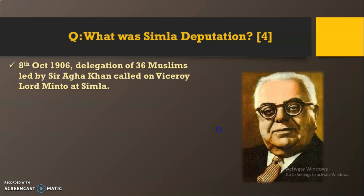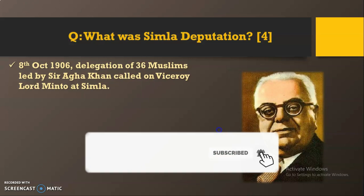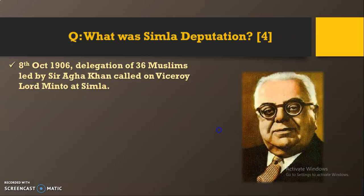Point number one: on 8th October 1906, a delegation of 36 Muslims led by Sir Agha Khan — as you can see in the picture — called on the then Viceroy, Lord Minto, at Shimla. There were certain prominent Muslim leaders at that time: Agha Khan, Nawab Noosinul Mulk, Nawab Wakarul Mulk, Nawab Sar Samiullah, and Nawab Ali Chaudhary. They decided to make the best of this opportunity.